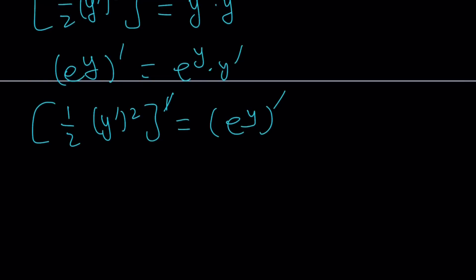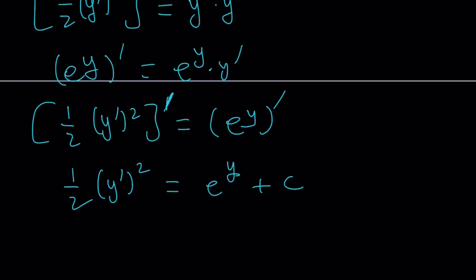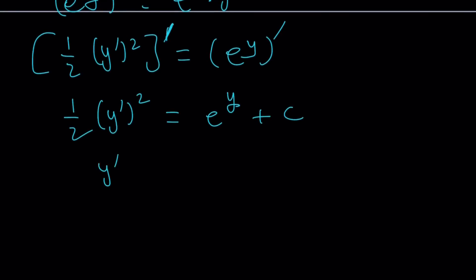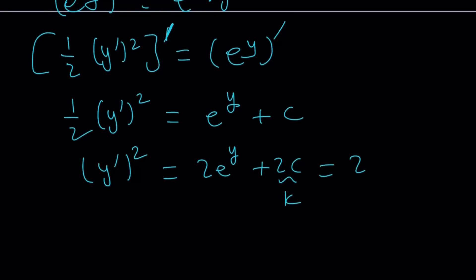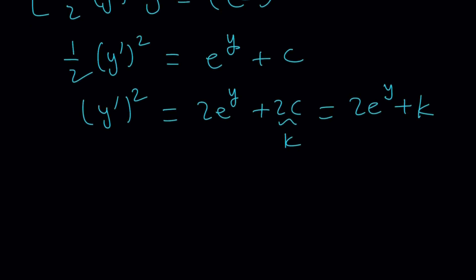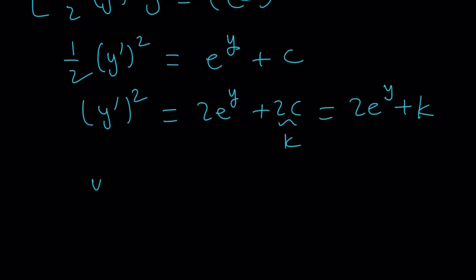We can just drop the derivatives: one half of y prime squared equals e to the power y, plus a constant. Multiplying both sides by 2 to get rid of the fraction, and replacing 2c with k, we get y prime squared equals 2e to the y plus k, where k is a constant. So we've got this interesting expression where the first derivative squared equals 2e to the y plus a constant.